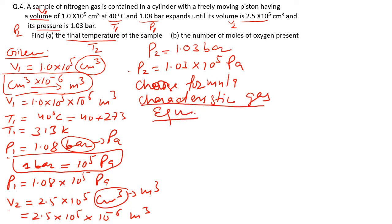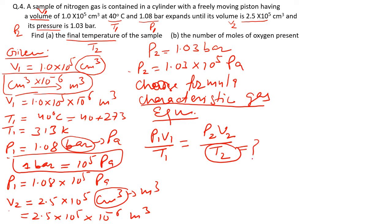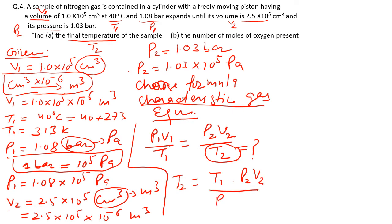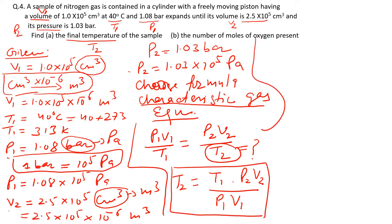The characteristic gas equation is P₁V₁/T₁ = P₂V₂/T₂. We rearrange to find T₂: T₂ = T₁ × (P₂V₂)/(P₁V₁).